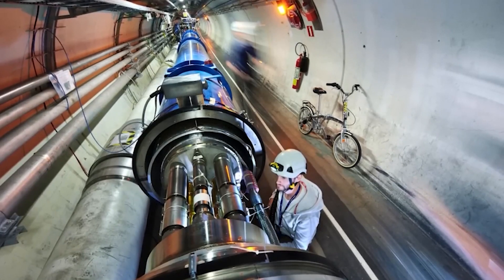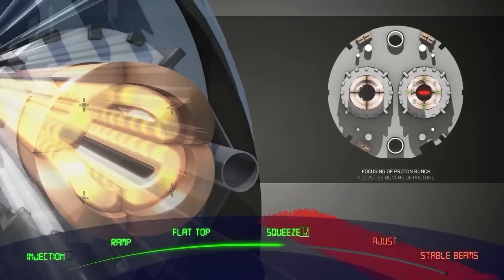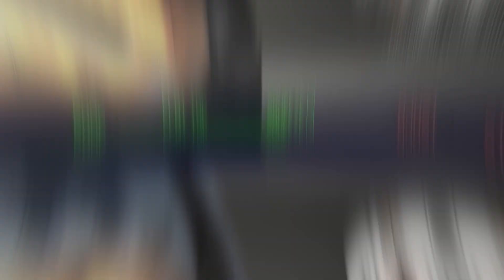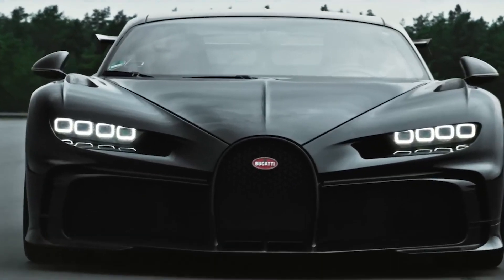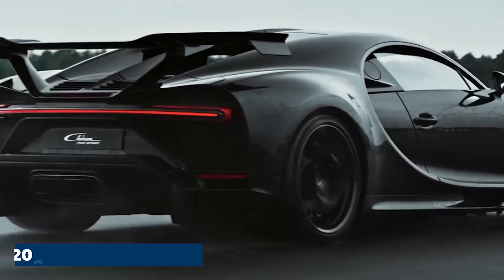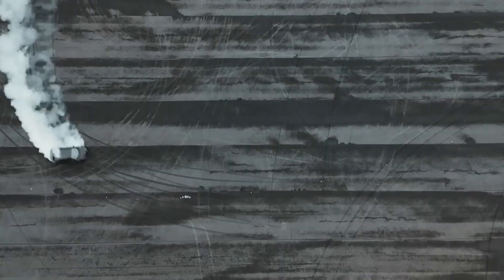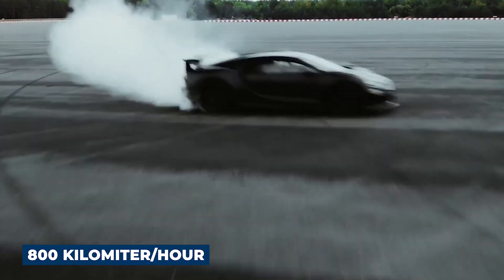With this increase, the LHC was expected to collide particles at an unprecedented 14 tera electron volts, a significant leap from its previous operational energy levels. To put that into perspective, if your car has a maximum speed of 200 kilometers per hour, increasing the energy output by this amount would allow your car to have a maximum speed of 800 kilometers per hour.